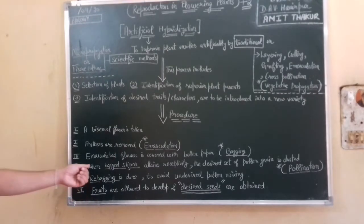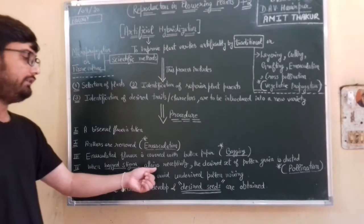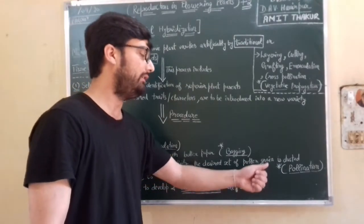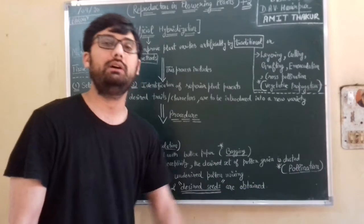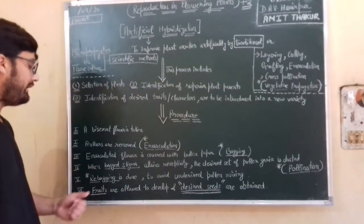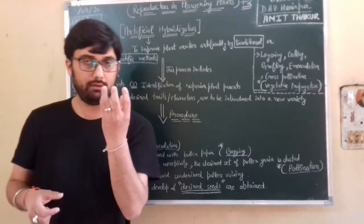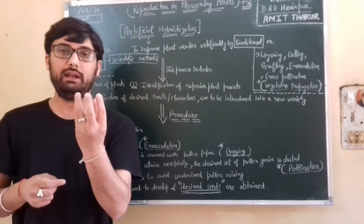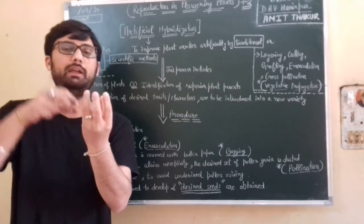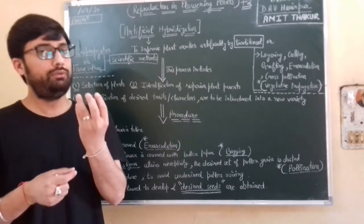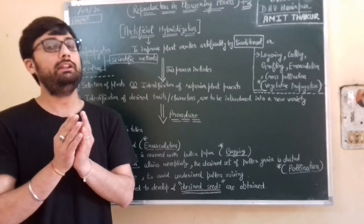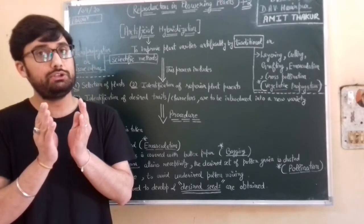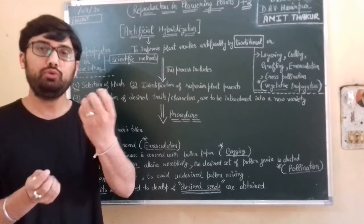Then, when the stigma attains receptivity, the desired set of pollen grain is dusted or pollination occurs. The emasculated flower has stigma, style, ovary - the female part. So when the female part is ready for receptivity and that female part now is mature enough to receive pollen, the desired set of pollen grains.